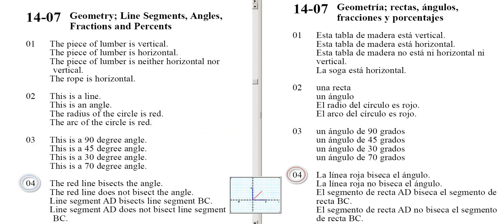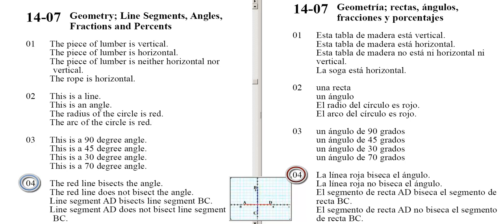The red line bisects the angle. The red line does not bisect the angle. Line segment AD bisects line segment BC. Line segment AD does not bisect line segment BC.